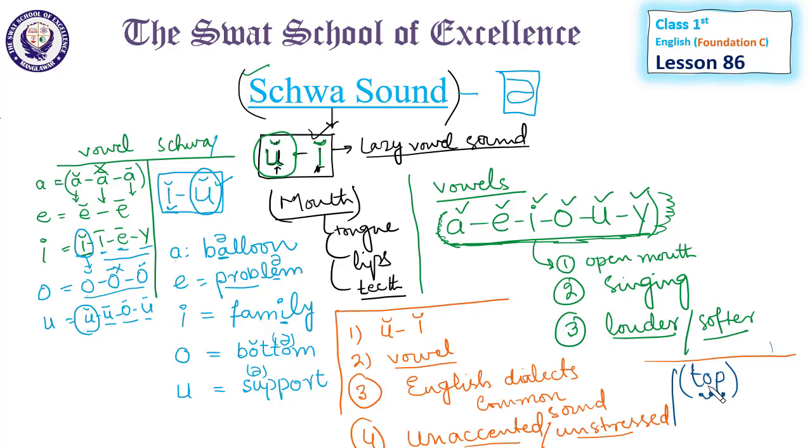For example, the word 'about.' 'About' has two syllables. The 'a' today is a full 'a' sound in the first syllable, but it can also be pronounced with schwa.